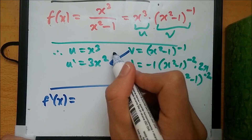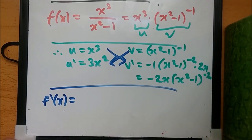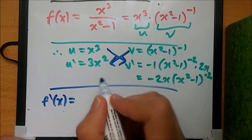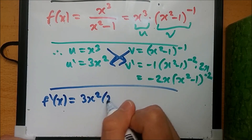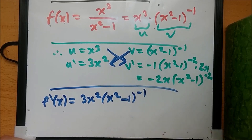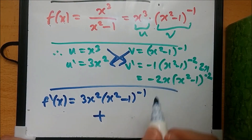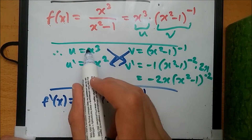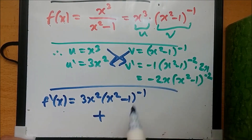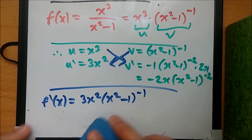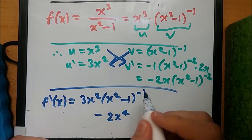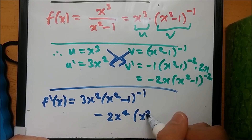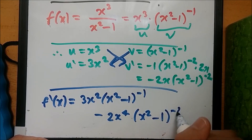Using the product rule — v times u prime plus u times v prime — we get 3x squared times (x squared minus 1) to the minus one, plus x cubed times minus 2x times (x squared minus 1) to the minus two. Simplifying, the second term becomes minus 2x to the power 4 times (x squared minus 1) to the minus two.